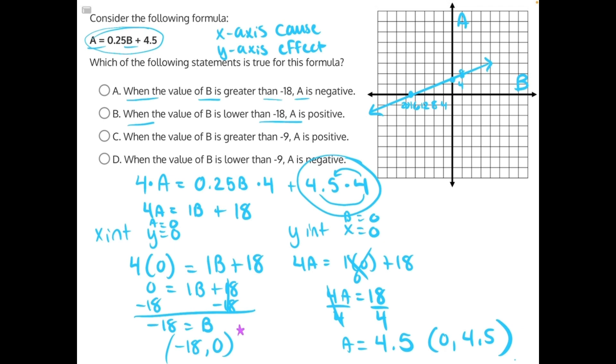So now let's take a look at our answer choices. A says when the value of B is greater than negative 18, which would be here, A is negative. Well, if we go to the right, which would be greater than this value, all of our A values are positive, not negative, making A incorrect.